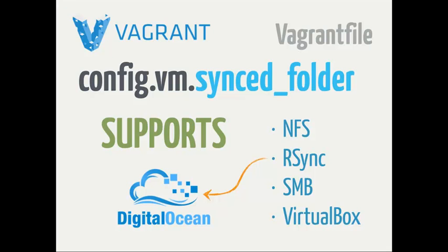Synced folders are by far one of my favorite features of Vagrant. They allow us to use our host machine and our normal development process as we would on any machine. I could have five different Vagrant instances running, all mounted to the same development folder — great for checking whether something works against PHP 5.3, 5.4, 5.5. It supports several mount types: by default VBoxFS, but also NFS, Samba, and for cloud deployment, rsync.